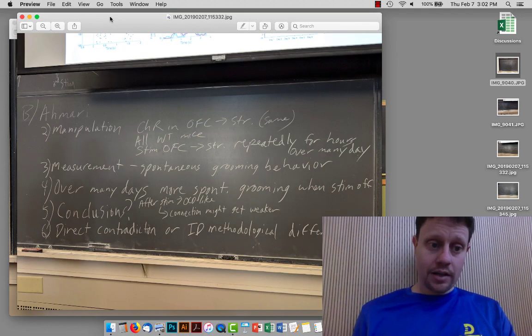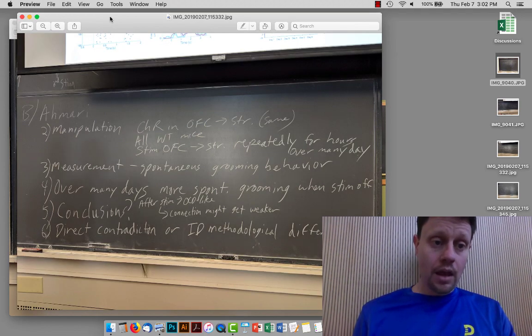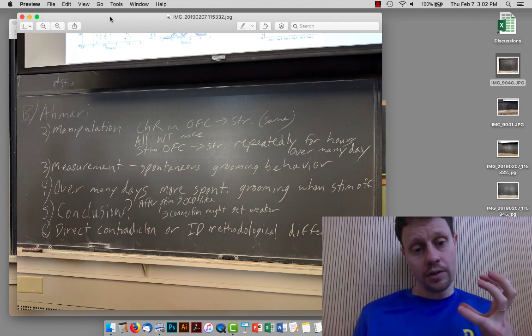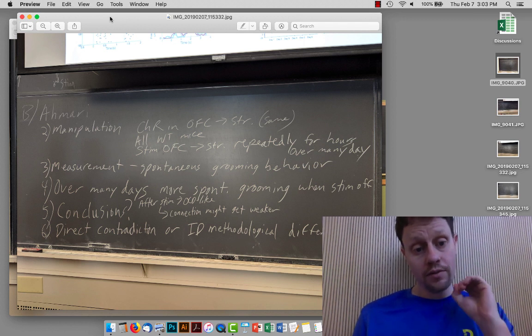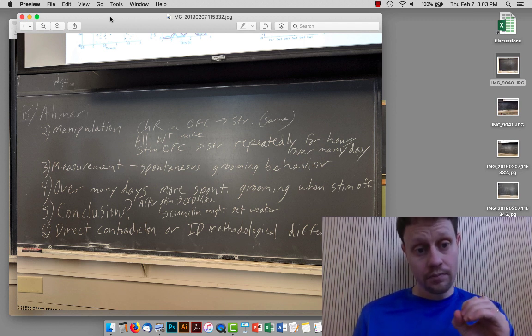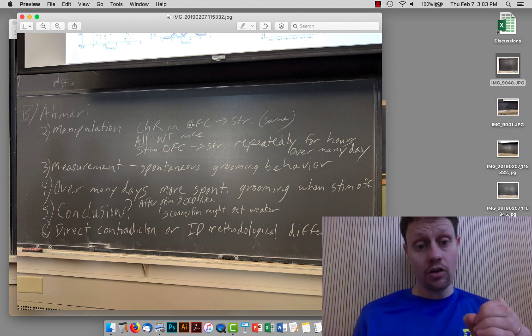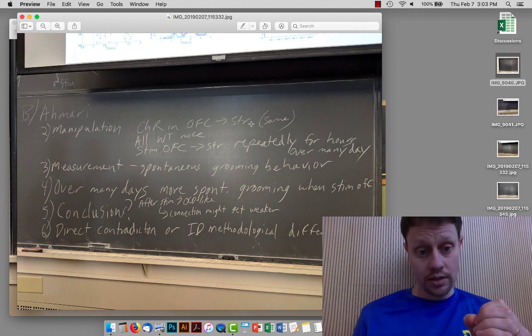The last paper that we talked about was Susanna Ahmari's paper. The question is pretty much the same. What is the role of these connections from the orbital frontal cortex to the striatum in terms of obsessive-compulsive disorder? One similarity is that there are mice that have channelrhodopsin in the orbital frontal cortex neurons that project to the striatum.